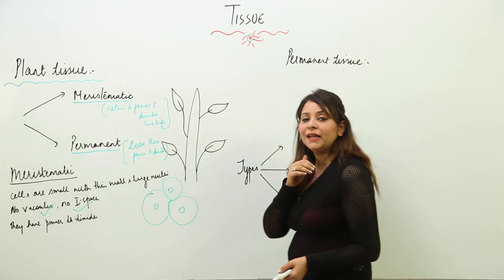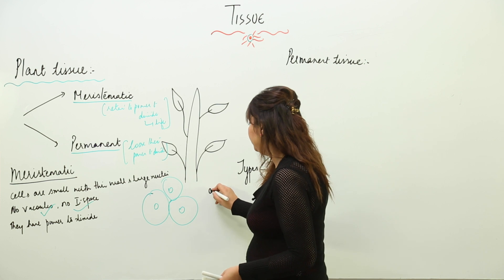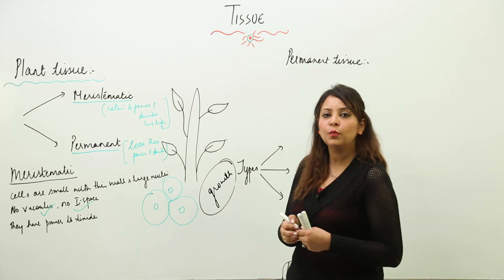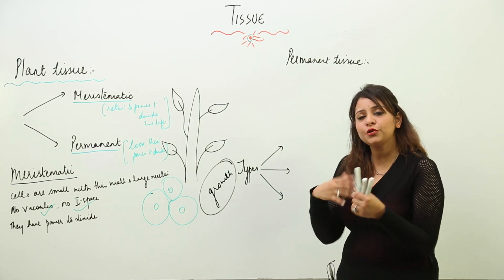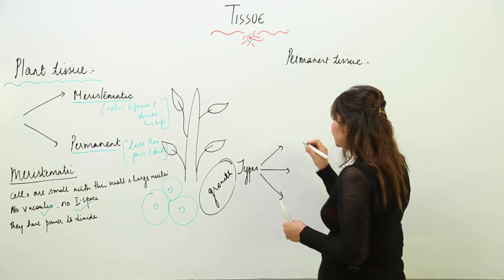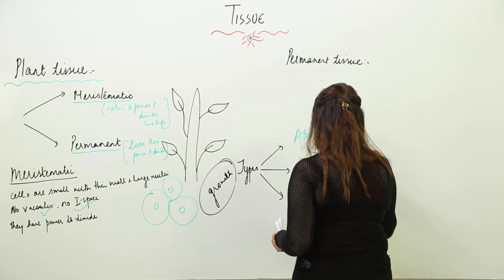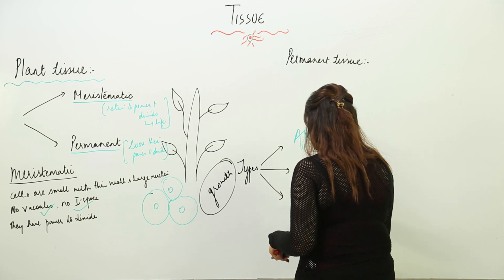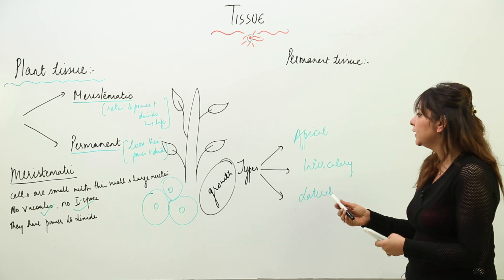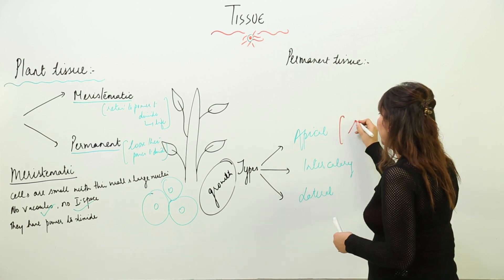Meristematic tissue is present in regions where it gives rise to new cells, so its function is to promote growth. Depending on which region the meristematic tissue is present, it is classified into three categories: apical meristem, intercalary meristem, and lateral meristem.